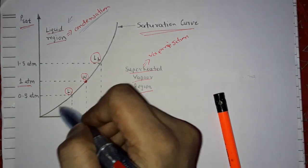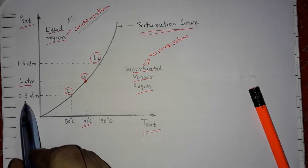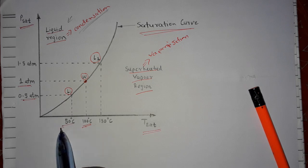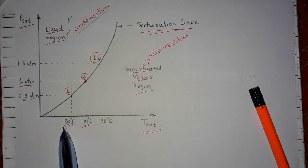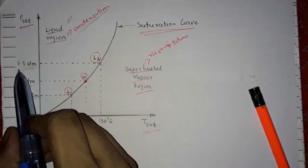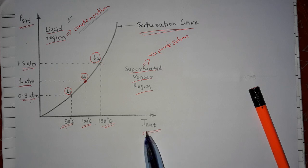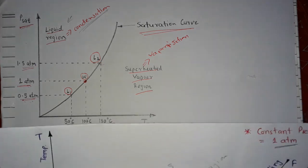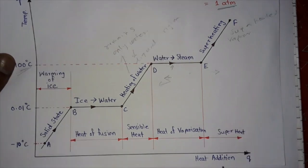This is on the saturation curve. Similarly, for liquid one at 0.25 atmospheric pressure there is a saturation temperature of 50 degrees Celsius, and for liquid two at 1.5 atmospheric pressure there is a saturation temperature of 150 degrees Celsius. If you want to know all about formation of steam, please watch my video on the phase change phenomenon of a pure substance — the link is in the description.